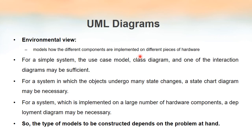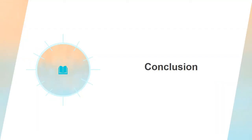These are the different views, and altogether there are nine UML diagrams — class diagram, object diagram, state chart diagram, use case diagram, and others. It is not compulsory to use all nine to model a system. What we have to model determines which diagram to use. The key point is: the type of models to be constructed depends on the problem at hand.